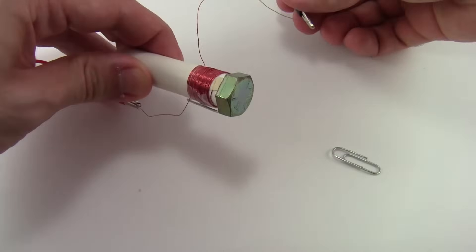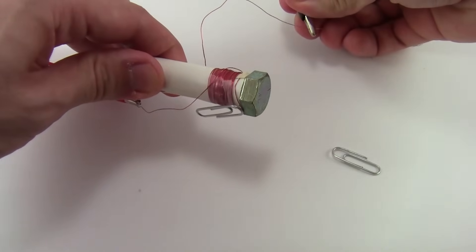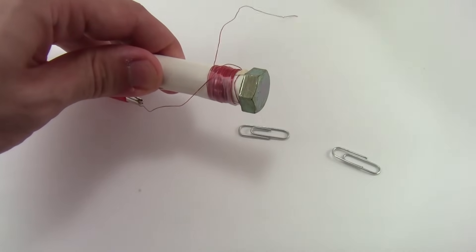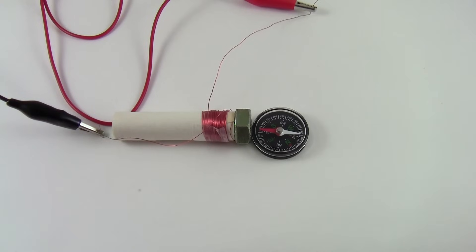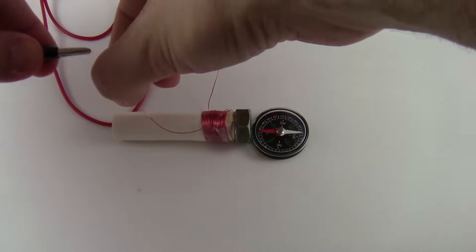Unlike a regular magnet, an electromagnet can be turned on and off by removing the flow of electrical current. If you reverse the direction of the electric current, you reverse the direction of the magnetic field.